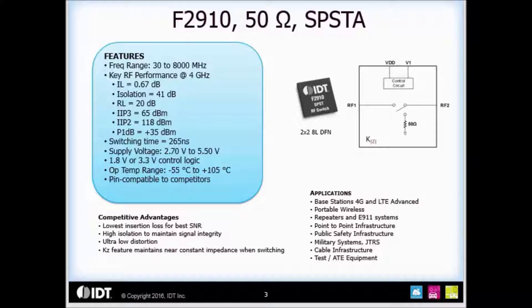The device supports a wide supply voltage range of 2.7 to 5.5 volts and either 1.8 or 3.3 volt control logic. It has an operating temperature range of minus 55 to 105 C and is in a small 2 by 2 millimeter DFN package.